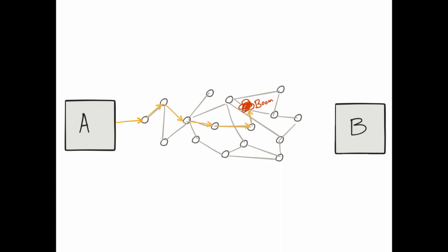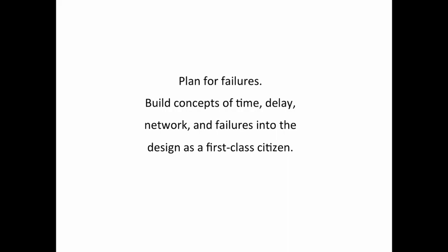A message could be arbitrarily delayed before it gets to B, or it could not get to B at all, or B responds and that response gets lost. Because of this discrepancy with time, we don't really know when there's a failure — we don't know if things failed or if they're just taking a long time. We have to build these concepts and model them into the system as a first-class citizen.